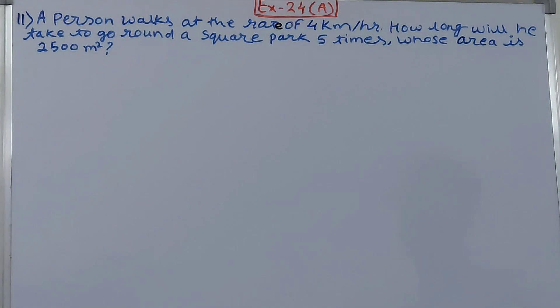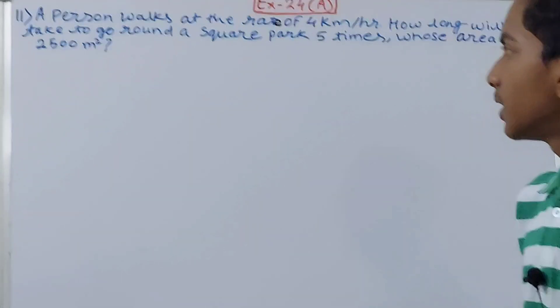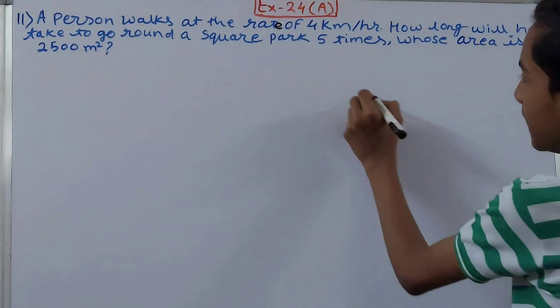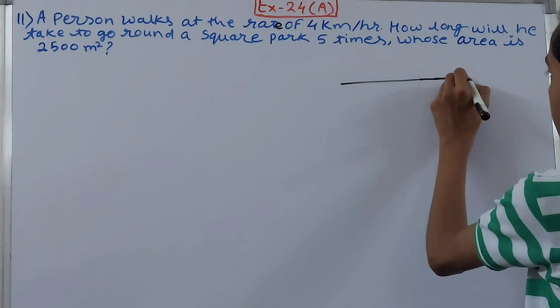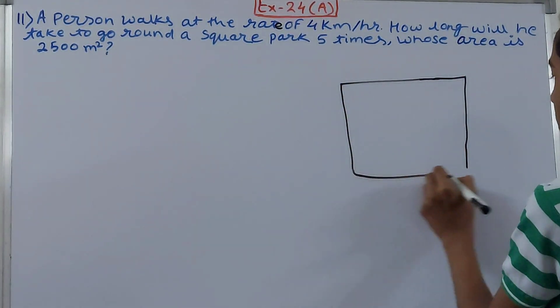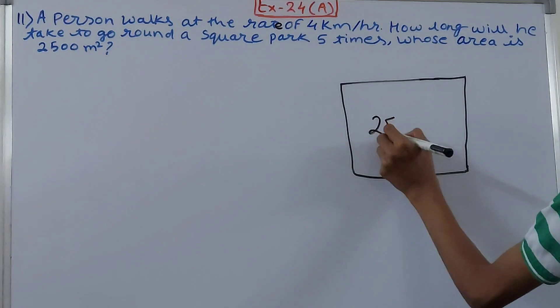The problem states: A person walks at the rate of 4 kilometers per hour. How long will he take to go round a square park 5 times whose area is 2500 square meters? So we have a square park with an area of 2500 square meters.